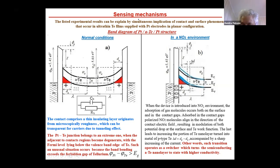In other words, such a transition operates as a switcher which turns the semiconductor tellurium into other materials, into metallic tellurium with higher conductivity.